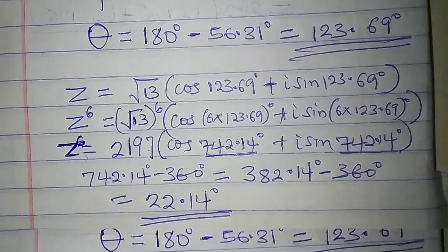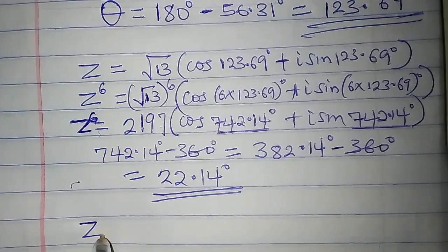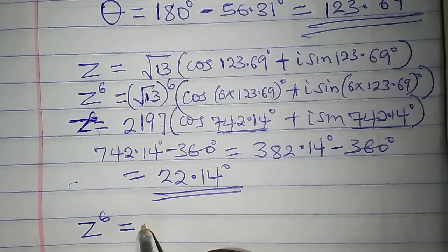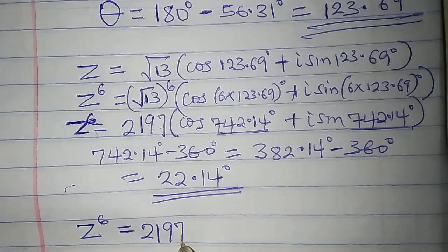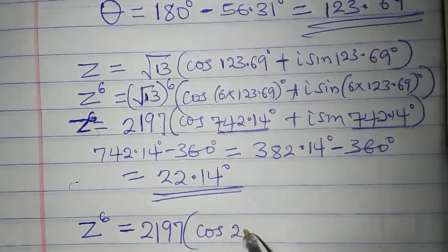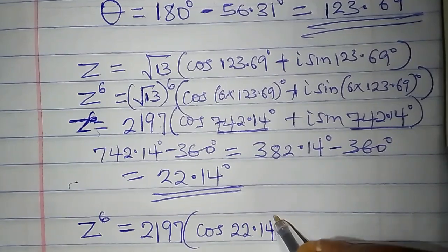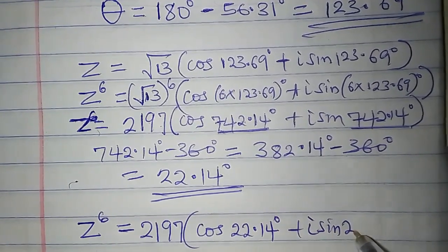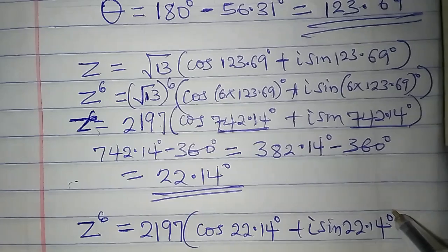Therefore, z to the sixth in polar form is 2197 times cos 22.14 degrees plus i sine 22.14 degrees.